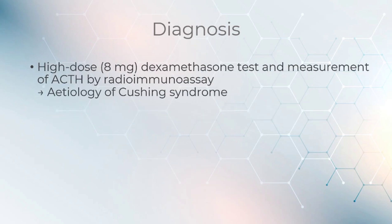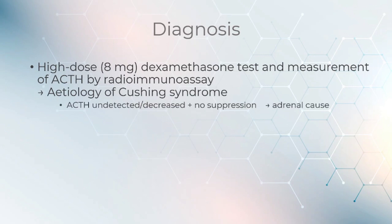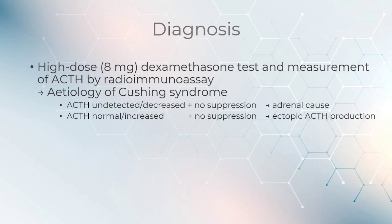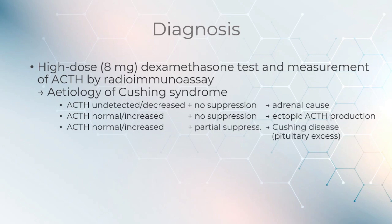High-dose dexamethasone test and measurement of ACTH by radioimmunoassay can determine the cause of Cushing syndrome. An undetectable or decreased ACTH with no suppression indicates an adrenal cause. A normal or increased ACTH with no suppression indicates ectopic ACTH production. A normal or increased ACTH with partial suppression indicates Cushing disease, that is pituitary excess.